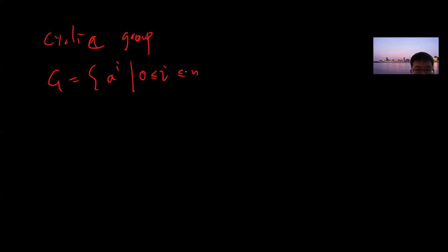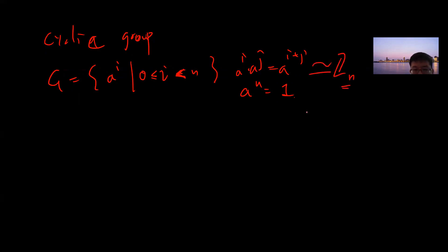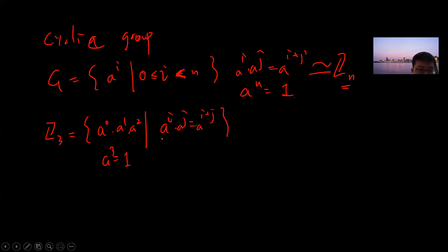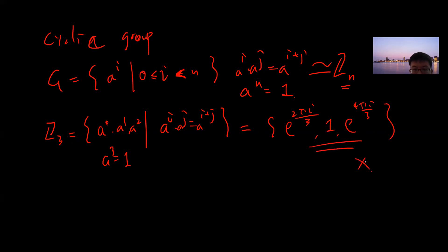Let's talk about cyclic groups. You construct all symbols a_i, for i from 0 to n, with a_i · a_j = a_{i+j}, and a_n = identity, where n is the smallest such number. This is called a cyclic group, denoted Z_n. For example, Z3 = {a_0, a_1, a_2} satisfying a_3 = 1. The common realization is the cube roots of unity: {1, e^{2πi/3}, e^{4πi/3}}.